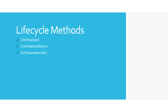After this, the OnParameterSet event gets called. Every component has parameters — you can pass these parameters in the route, or set them when you have nested components. You have control over that event where you can override it and manipulate the parameters. There is also an asynchronous version of this event where you can deal with database or API calls.